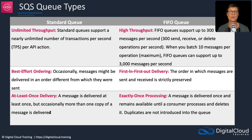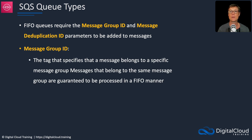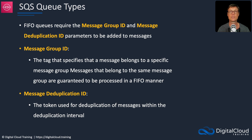With standard queues, you get at least once delivery, meaning a message is delivered at least once but occasionally it could be delivered twice. If processing that information twice is going to be an issue, you need either application logic or a FIFO queue. The FIFO queue has exactly once processing, so a message is delivered only once and duplicates are not introduced into the queue. When using a FIFO queue, there's a message group ID and a message deduplication ID parameter added to messages. The message group ID specifies that the message belongs to a specific group, and messages in that group are guaranteed to be processed in a FIFO manner. The deduplication ID is a token used for deduplication of messages within a specific deduplication interval, ensuring exactly once processing.